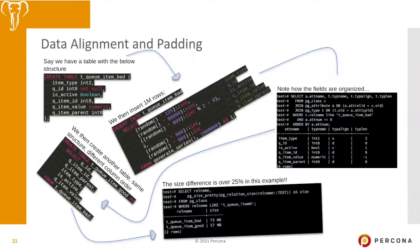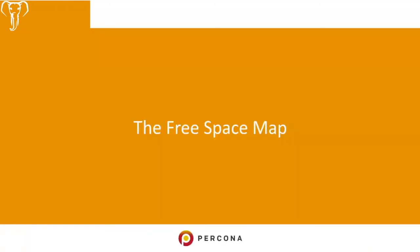To summarize the data alignment section: for the same one million rows, just by changing the column ordering in the table we saw a huge difference in storage. This can save a lot of space, and since everything needs to pass through memory and the CPU, it also improves query performance.